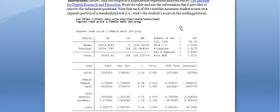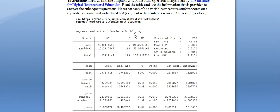The number of observations tells you how many test takers are in the dataset — how many rows of data. Remember from designing your own datasets that observations are your rows, and variables are your columns. In this case, the dataset used for this regression involved 200 rows of data, with separate columns for read, write, gender, math, and general academic progress.